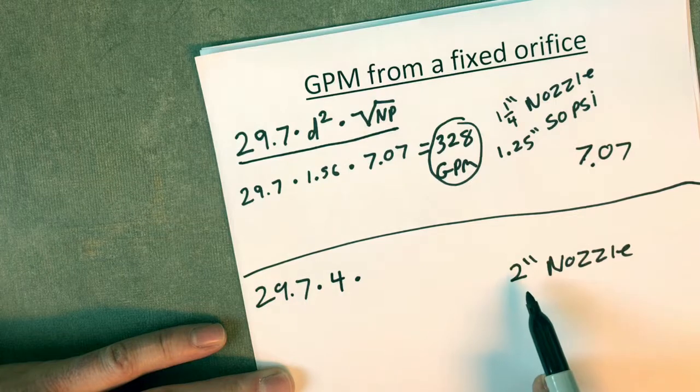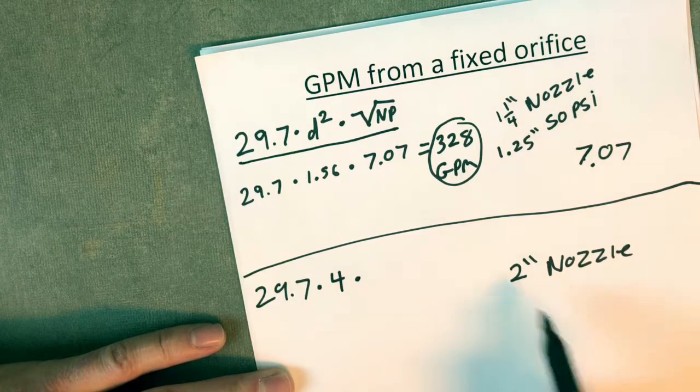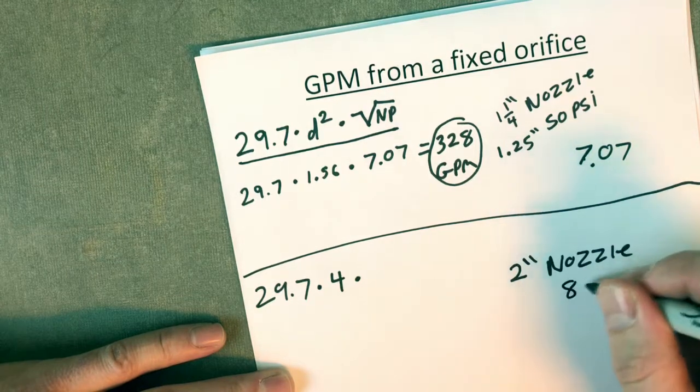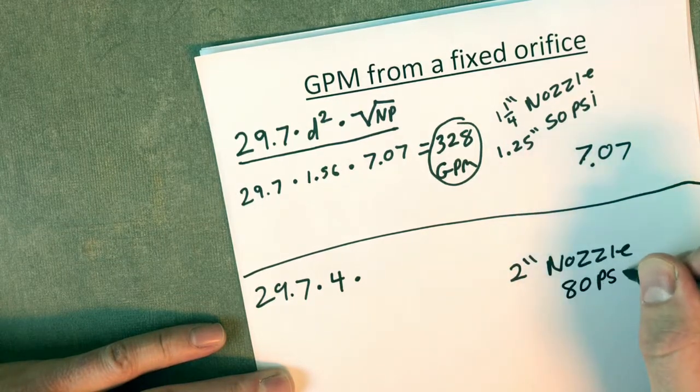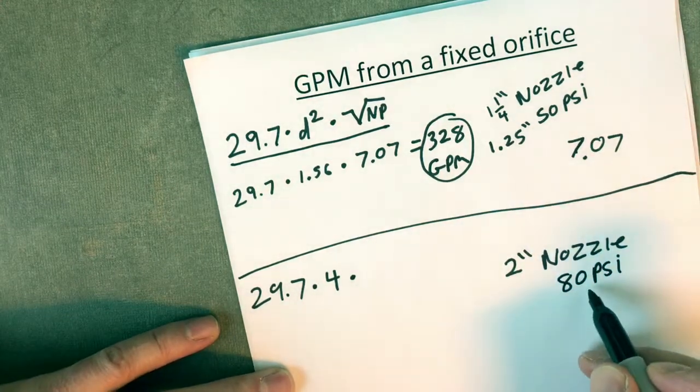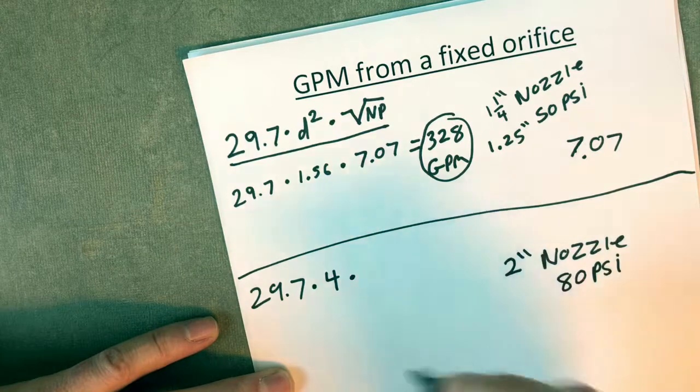What's our nozzle pressure on a 2 inch tip? Well, it's not going to be on a hand line. That's going to be a monitor type evolution. So that would be 80 psi. The square root of 80 is 8.94.